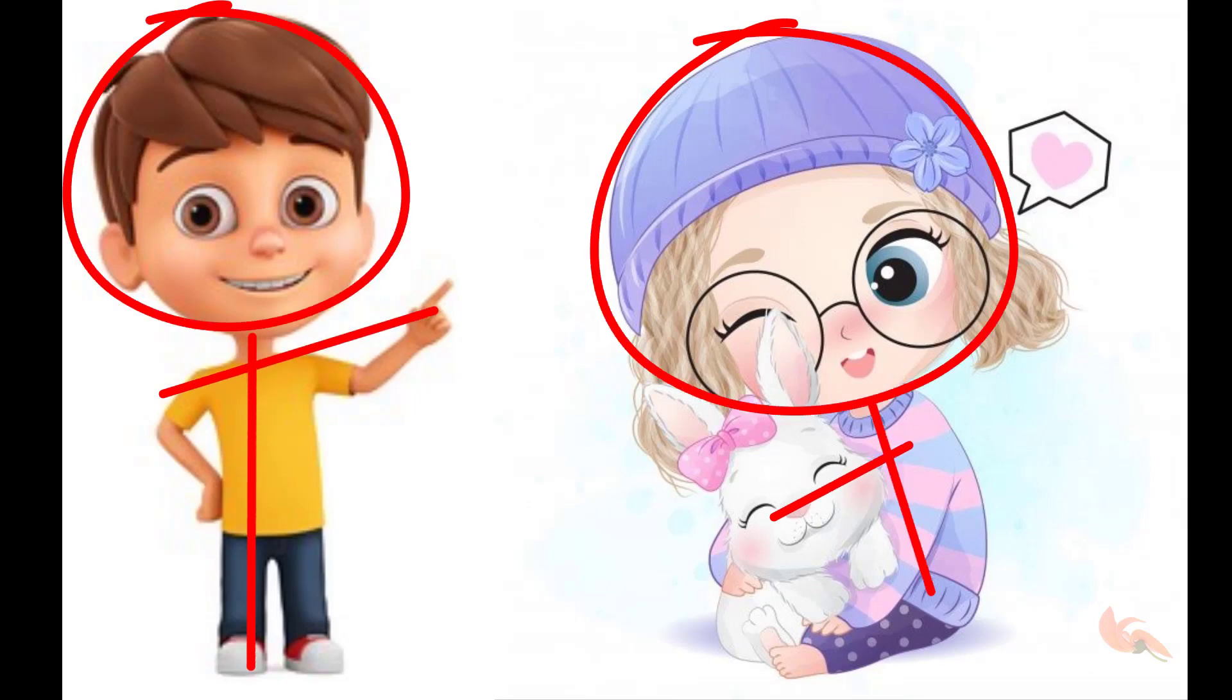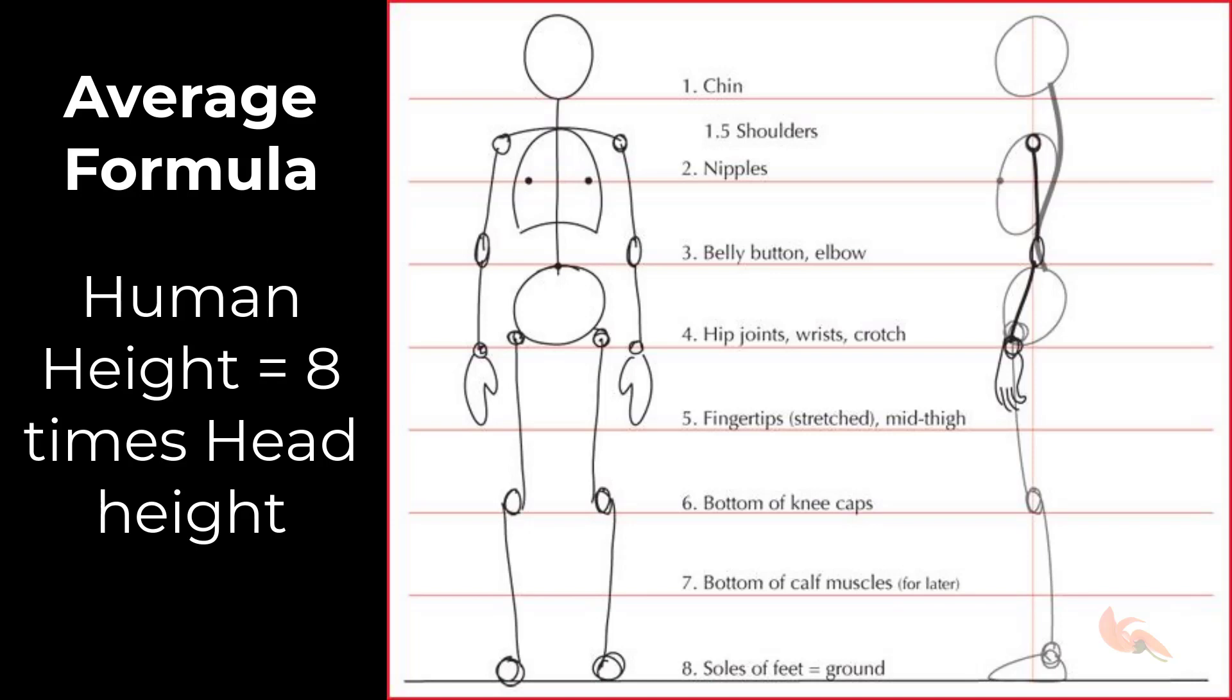If you draw totally disproportionate figures, they will look cartoonish. So you can start with the average formula and then make the necessary changes person to person to match individual features.